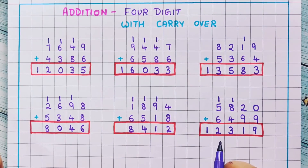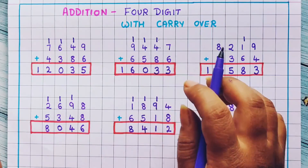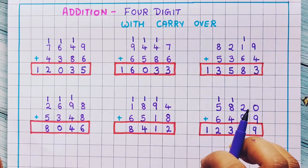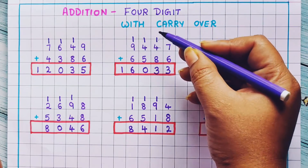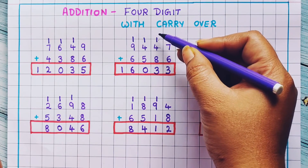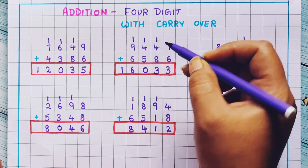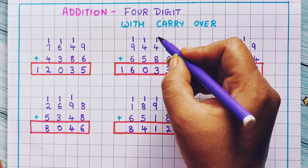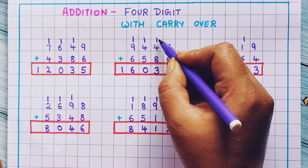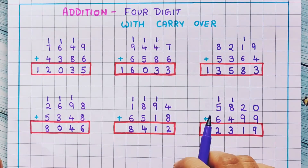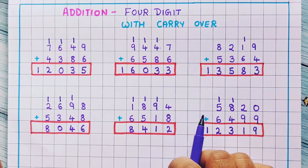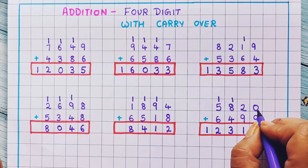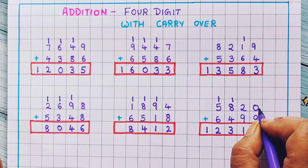I hope you have understood the addition of 4-digit numbers with carryover. The problems are very easy. You just have to do the addition and write the carryover number above. And remember one thing: don't forget to add the carryover number, because many children forget it. If you enjoyed this video, do give it a like, share this video, and subscribe to our channel.